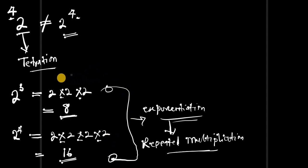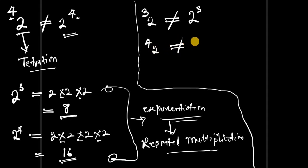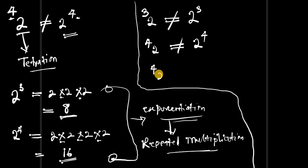But if you consider tetration, it is something very different. If you have 3 and 2 written as tetration, it's quite different from writing 2 to the power of 3. Similarly, if you have 4 and 2 in tetration, it's quite different from writing 2 to the power of 4. The meaning of writing ⁴2 is writing 2 power 2 power 2 power 2.